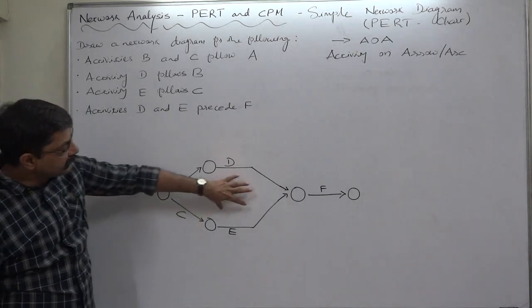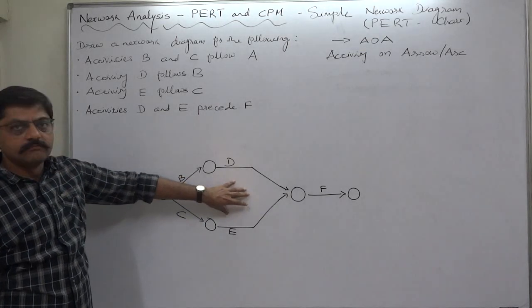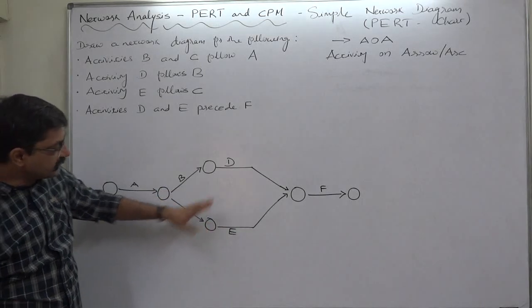D and E precede F or F is the common successor of D and E. That means this is F and this is end of the network, end of the project. Very simple.